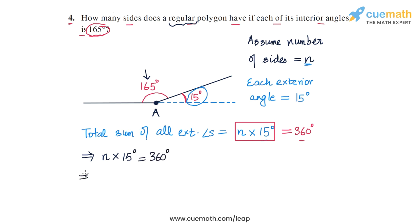So n is simply 360 degrees divided by 15 degrees. 360 by 15 is 24. So we get n equal to 24. The number of sides of the regular polygon is 24, and this is the answer for question number 4.